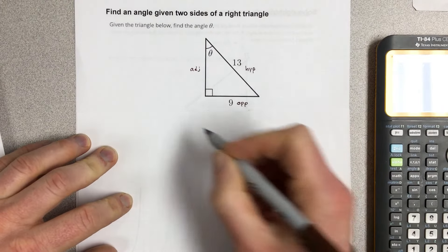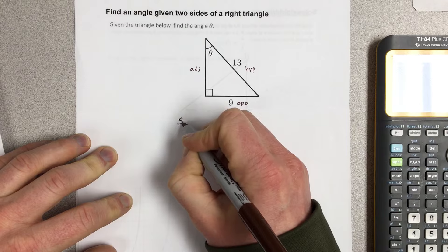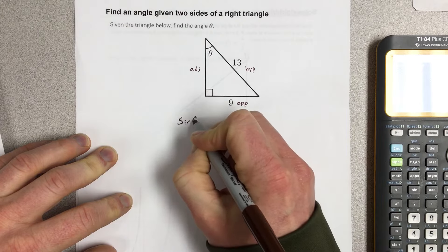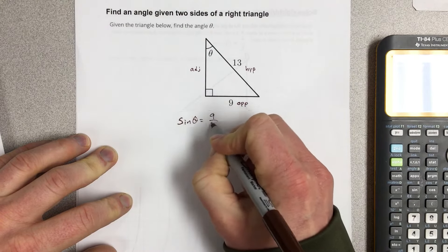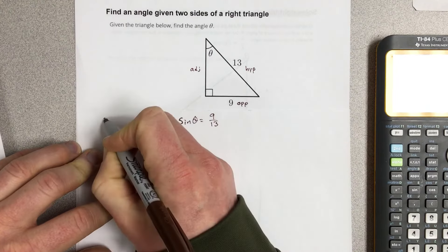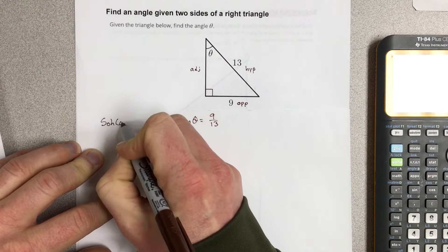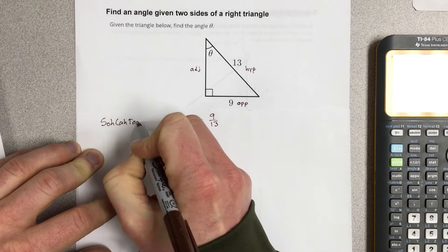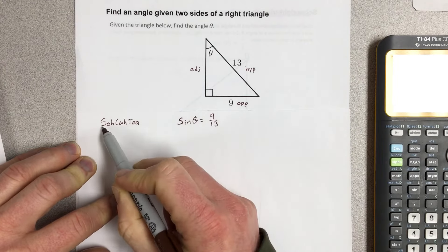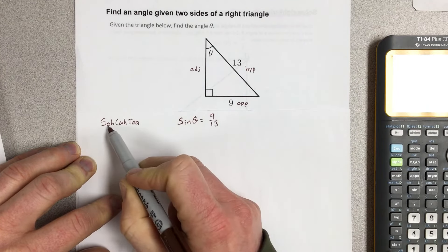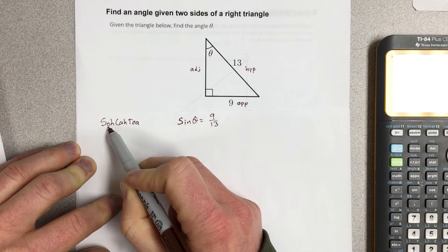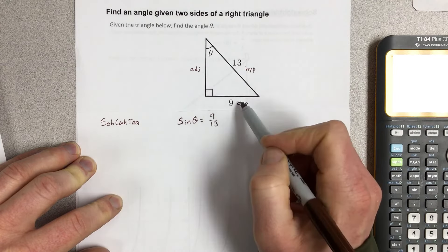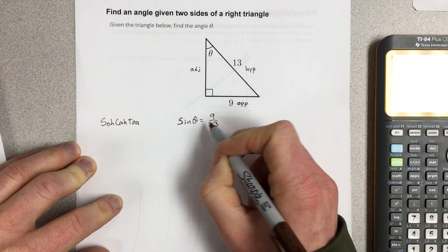Now what we're going to do is use sine. So sine of theta equals 9 over 13, and we're using sine because of SOHCAHTOA. This is our acronym for remembering sine, cosine, and tangent, and their trig ratios. So sine is opposite over hypotenuse. Opposite over hypotenuse is 9 over 13.